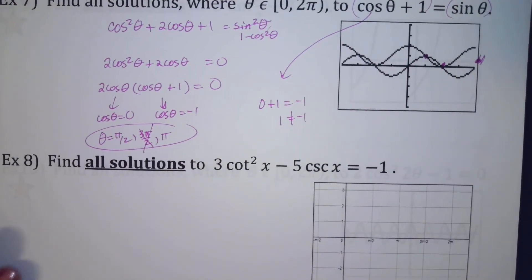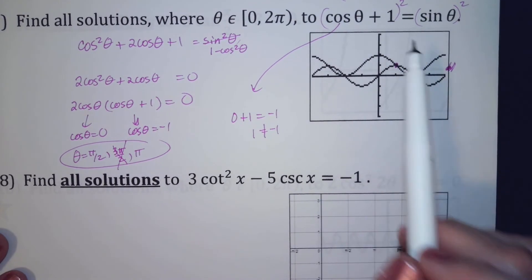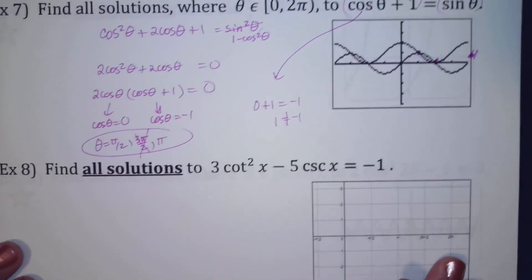Graph is a good check. Squaring both sides is dangerous — you've got to go check your answers.